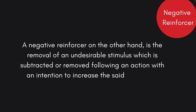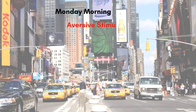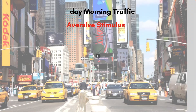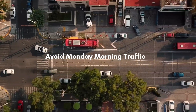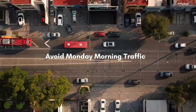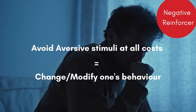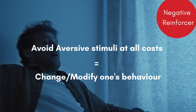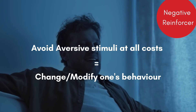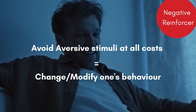Negative reinforcement, on the other hand, is the removal of an undesirable stimulus following an action with the intention to increase that behavior. For example, if you dislike getting stuck in traffic on Monday morning, you wake up early and leave early to avoid the rush. Negative reinforcers shape behaviors because aversive stimuli involve discomfort, either physical or psychological. Behaviors are negatively reinforced when they allow you to escape from aversive stimuli already present or completely avoid them before they happen.